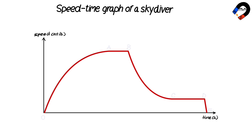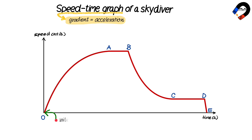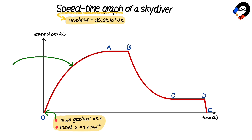The speed-time graph of the skydiver's motion is shown on the screen. The gradient of a speed-time graph represents the acceleration. The initial gradient at point O is 9.8, because the initial acceleration is 9.8 meters per second squared. Between O and A, the speed increases and the gradient decreases, which means that the acceleration also decreases.